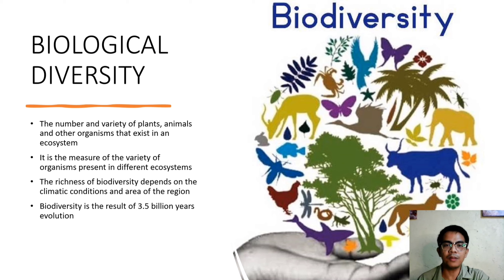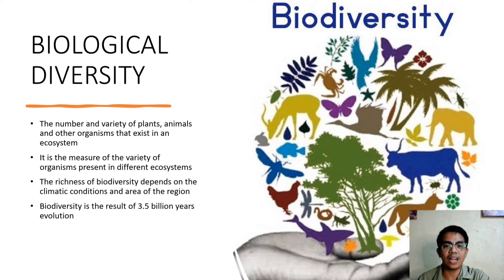To properly start our discussion, let me define biodiversity. Biodiversity is a combination of two words: biological and diversity. Biological means living organism and diversity means variation. Biodiversity is the number and variety of plants, animals, and other organisms that exist in an ecosystem. It is not only pertaining to plants and animals — it also includes microorganisms like viruses, bacteria, and the like.